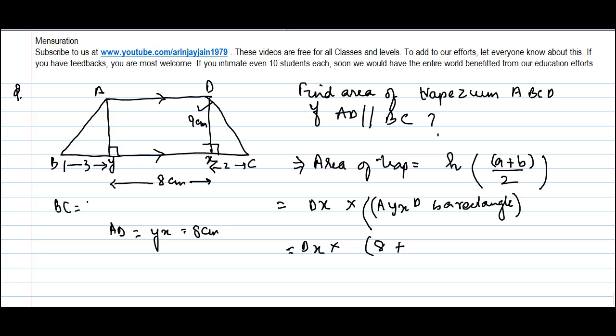So BC is equal to BY plus XY plus XC. BY we know is 3 cm, XY is 8 cm and XC is 2 cm. So 13 cm divided by 2 or 21 divided by 2 into DX which is 9 cm.